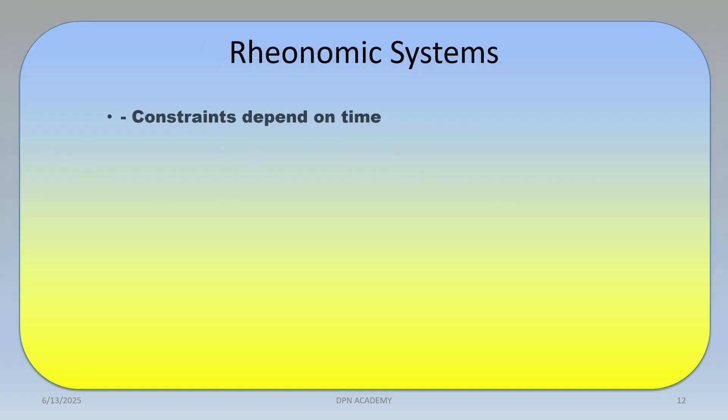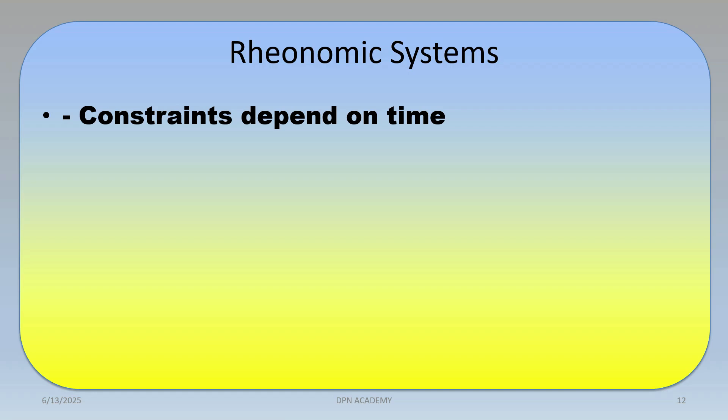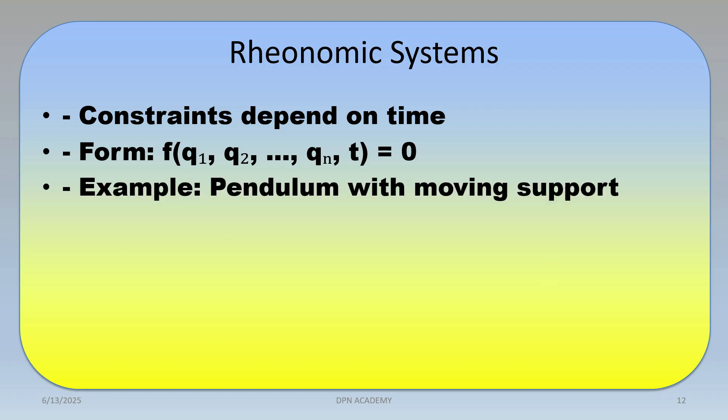In contrast, a rheonomic system has constraints that are explicitly dependent on time. The constraint form is F(q₁, q₂, ..., qₙ, t) = 0, where time t is included. An example is a pendulum with a moving support, as opposed to the scleronomic case of a fixed support.